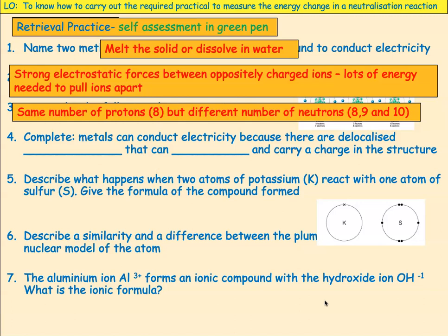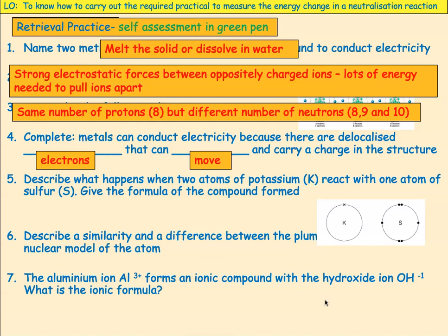There is another way of describing it. You can say that they have the same atomic number but a different mass number. Metals conduct electricity because there are delocalised electrons that can move and carry charge in the structure.